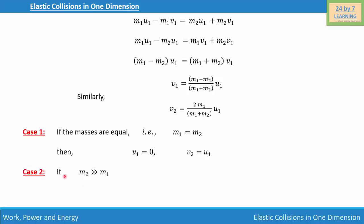Case 2: if the second body is much heavier than the first body, then v1 is approximately equal to negative u1 and v2 is approximately equal to 0. This is how we define elastic collision in one dimension.